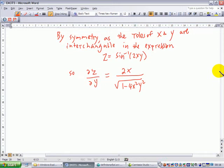z equals sine inverse of 2xy, so you just interchange x and y. You find that ∂z/∂y will be equal to 2x over square root of 1 minus 4x²y².